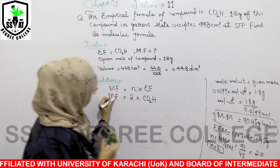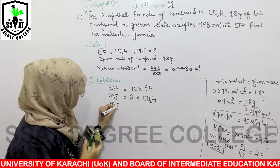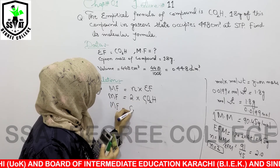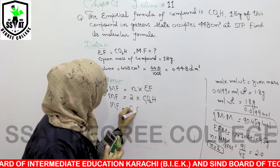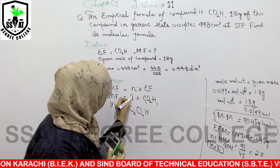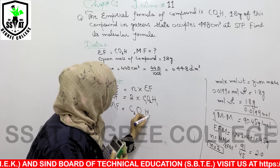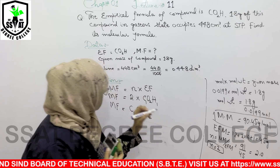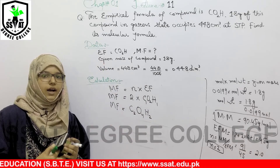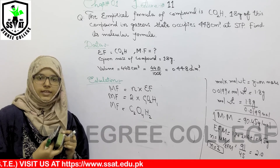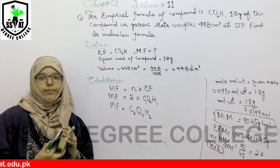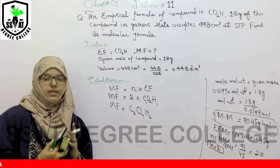So the molecular formula becomes: carbon 1 × 2 = C₂, oxygen 2 × 2 = O₄, hydrogen 1 × 2 = H₂. The molecular formula is C₂O₄H₂. This was all about the numerical. Your objective was to find the molecular formula with the help of volume, and that is done. Thank you so much.